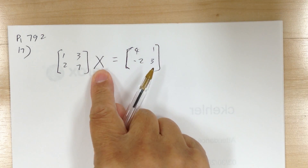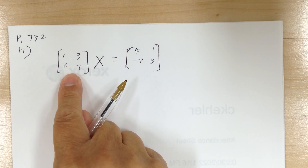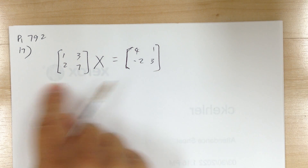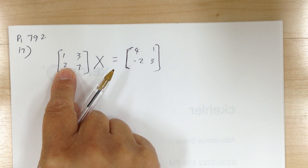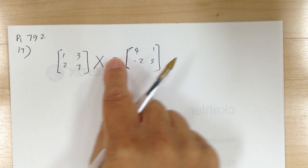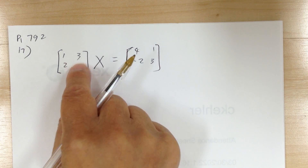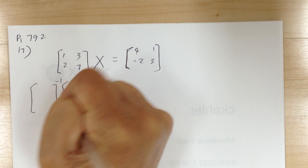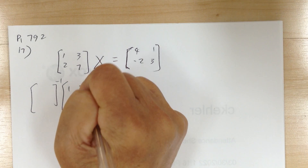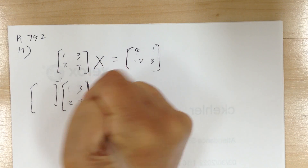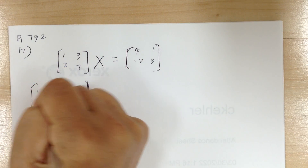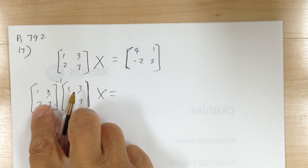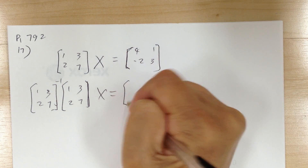To solve for X, you have to get rid of that coefficient matrix. In matrices, you cannot divide. So you need to multiply by the inverse. You have to be careful where you put it — you need to multiply by the inverse on the left side to cancel it out.